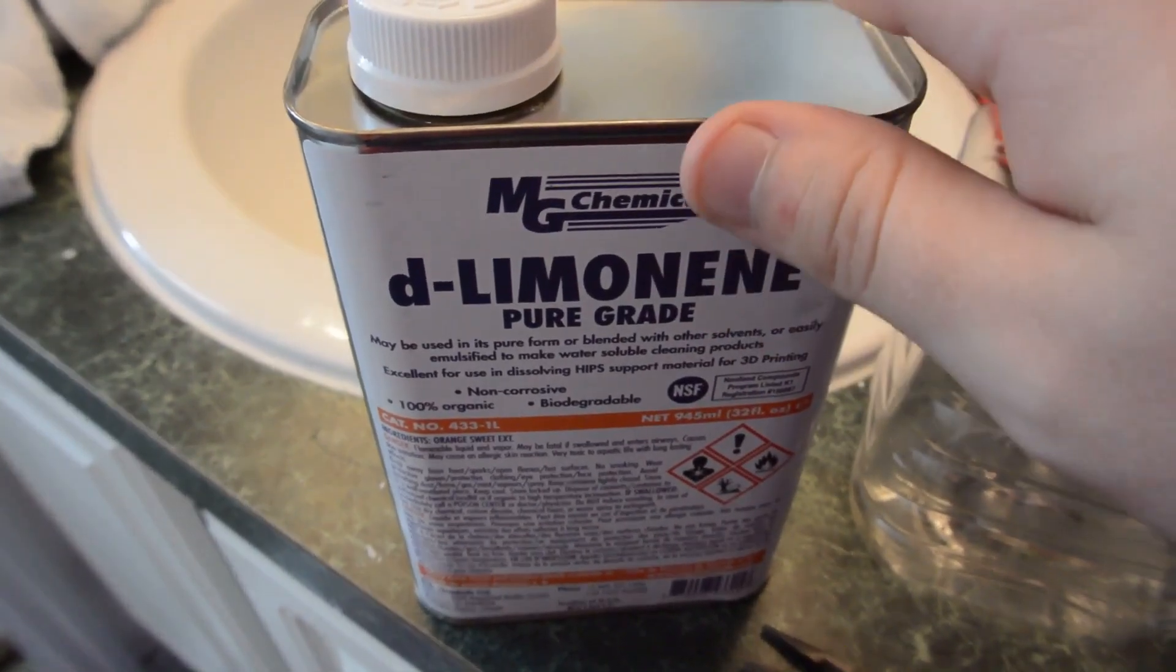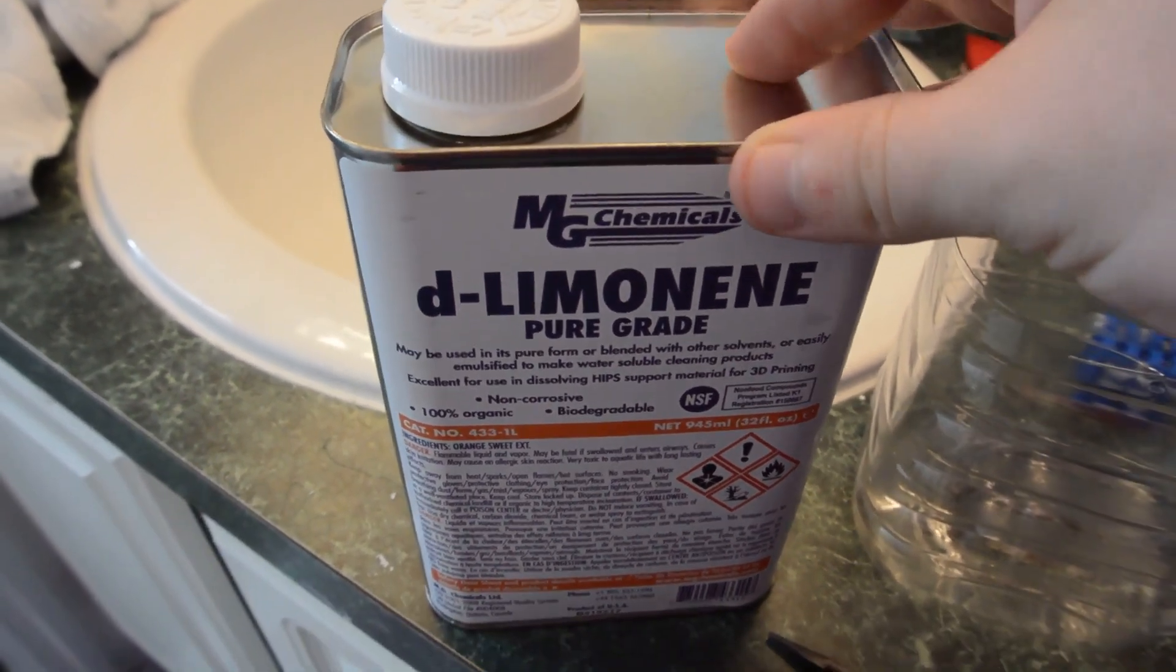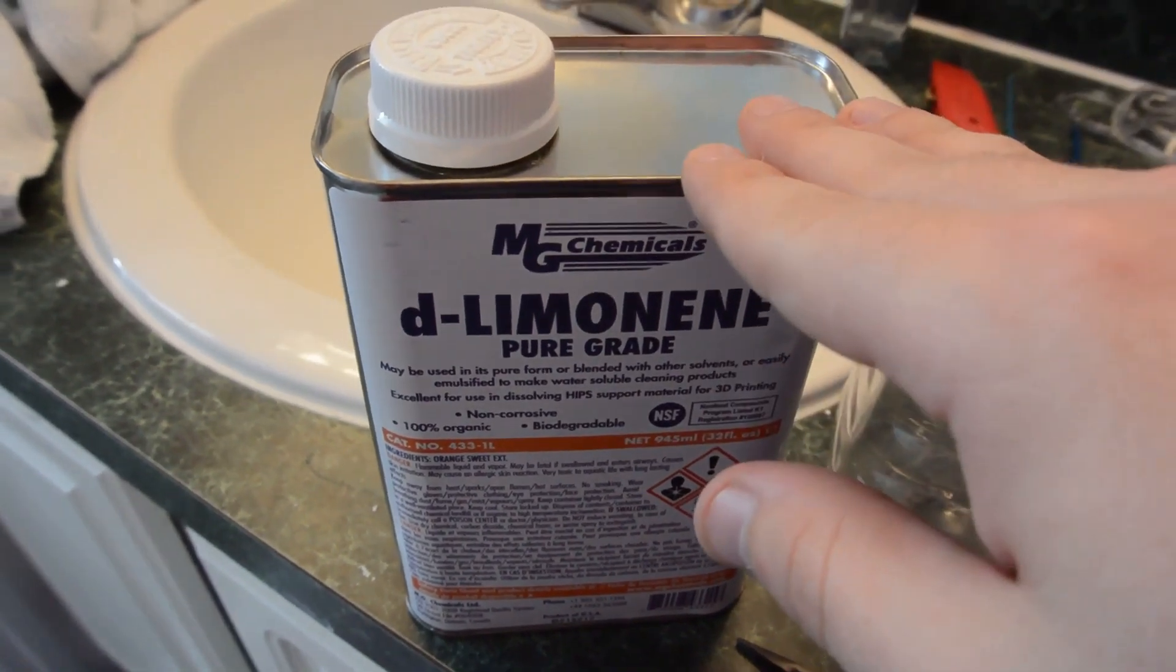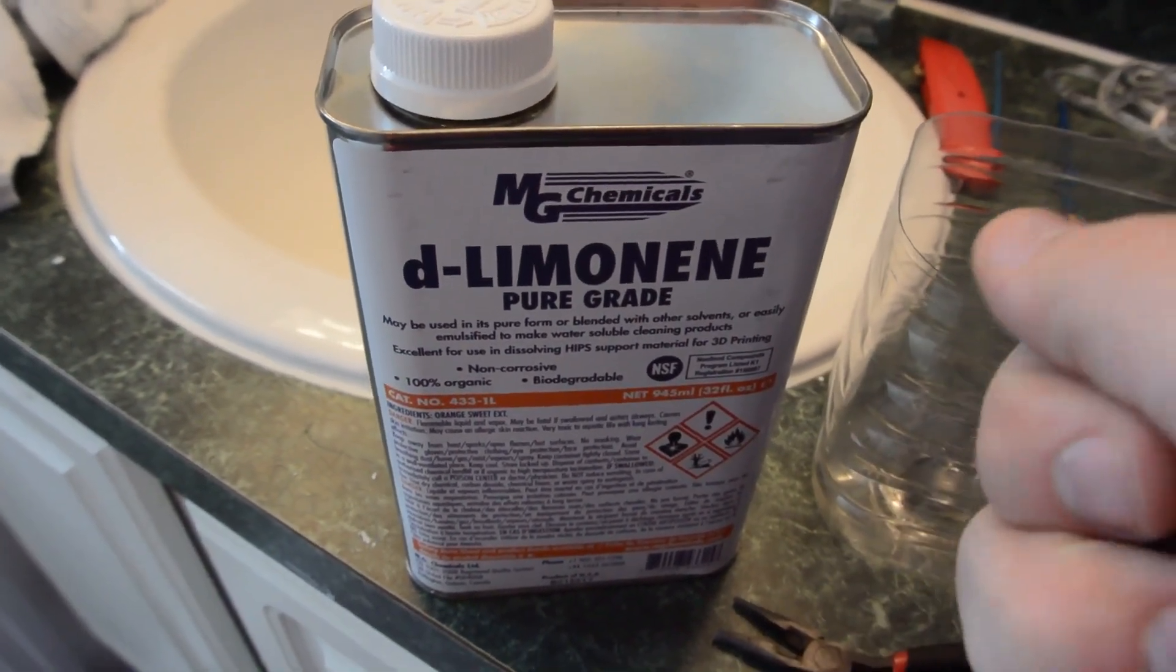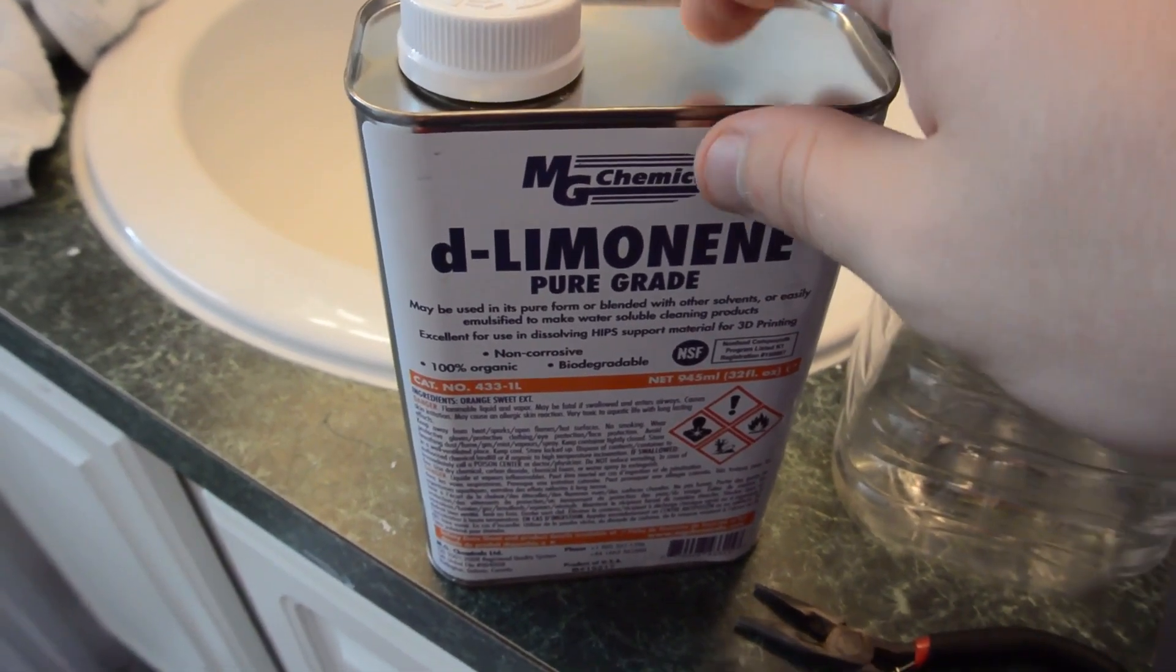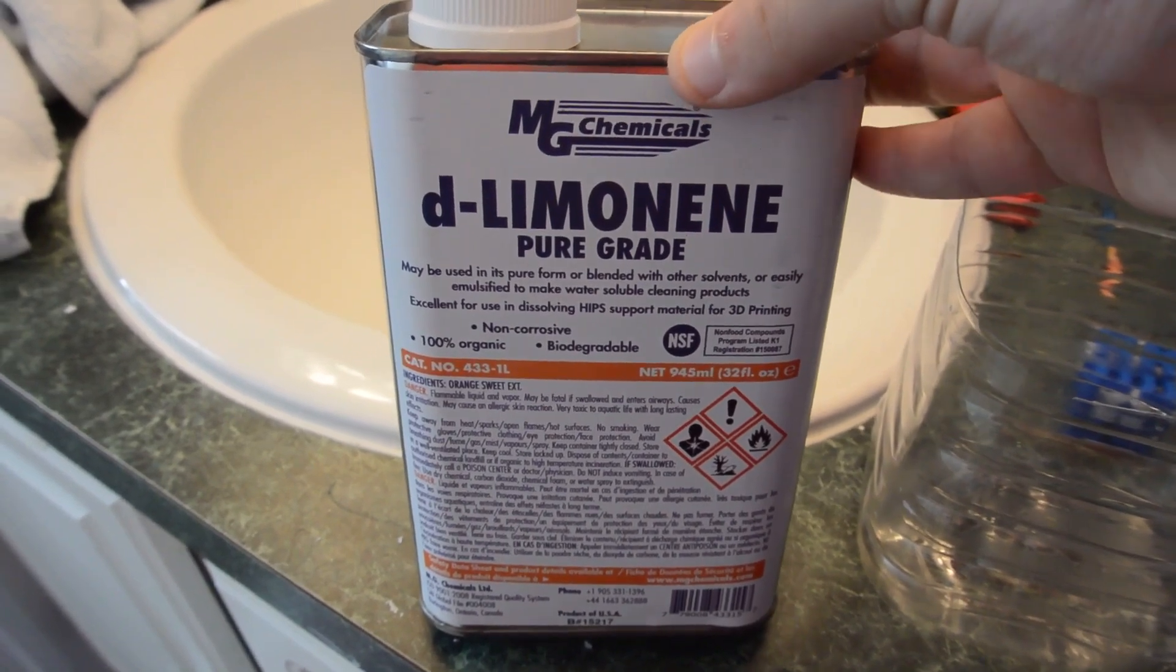So, the chemical we can use to dissolve the high-impact polystyrene is limonene. And this is basically made from the oils from orange peels. They take the orange peels, they crush it, they press it and extract all the oils. And that's how limonene is made. And it has a very, obviously, orange smell.